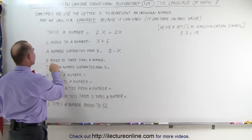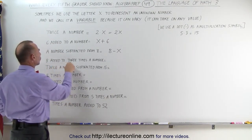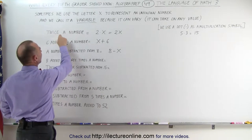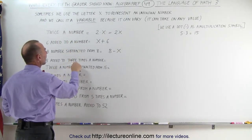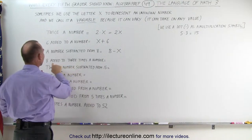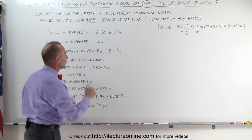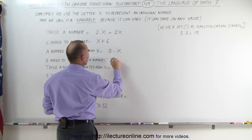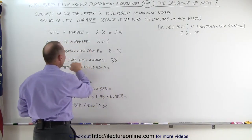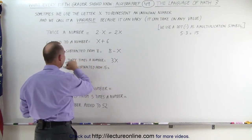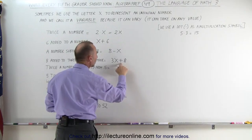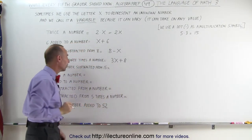The next sentence says '8 added to 3 times a number.' Here we have 3 times a number, so we call that 3X, and then we add 8 to that. 3X means 3 times X — that's 3 times an unknown number — and then we add 8 more to that. That is 8 added to 3 times a number.